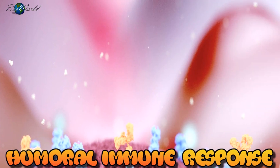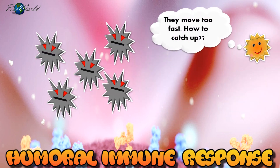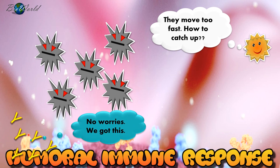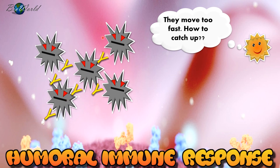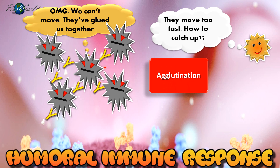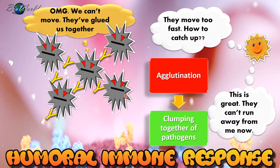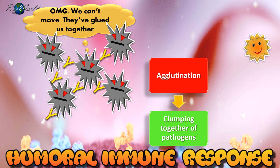With nowhere to hide, the pathogen just has to escape the macrophage by moving faster. But antibodies have a solution for that too. They bind to the epitopes of the pathogens, sticking them together in a process known as agglutination. In agglutination, the pathogens are clumped together, making them unable to move or to move very slowly. And this is of benefit to the macrophage since now the macrophage can slowly capture the pathogen.